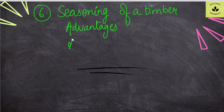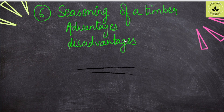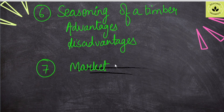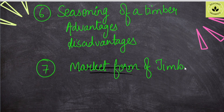Natural seasoning or artificial seasoning — types of seasoning, their advantages and disadvantages, and methods of seasoning are also important. Sometimes questions come from the market forms of timber — if something is 30mm thick and 50mm wide, what is it called: a deal, board, bulk, log, or plank? So the market forms of timber with their dimensions are asked.